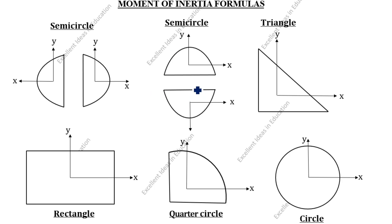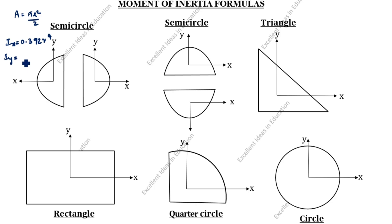You see the first and second drawing position is different. What is the area of semicircle formula? Area of semicircle is pi r square by 2. What is the moment of inertia about the x-axis? Ix is equal to 0.392 r power 4. Iy is equal to 0.11 r power 4. So, Ix equals 0.392 r power 4, or pi by 8 r power 4, or pi by 128 d power 4.